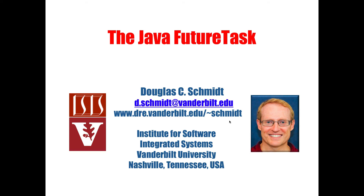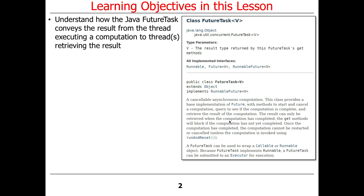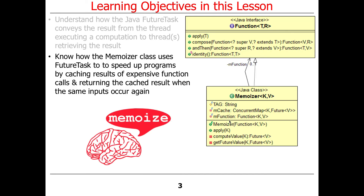Today's topic is Java FutureTask. We'll talk about what a future task is — it's a bit of an odd class. It's basically used to convey the result from the thread executing a computation to one or more threads waiting to get the result. I'll give a very interesting example called the Memoizer class, which uses future tasks to speed up programs by caching the results of expensive function calls. This connects to earlier discussions about the executor service.